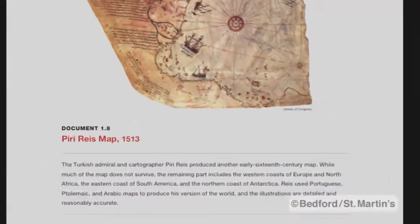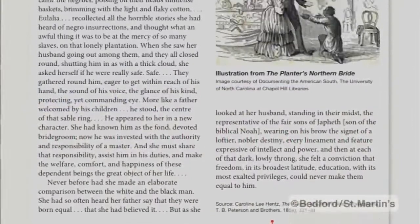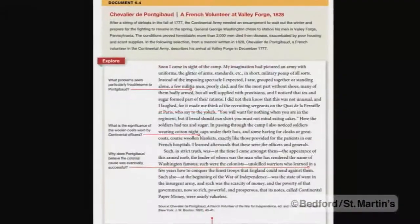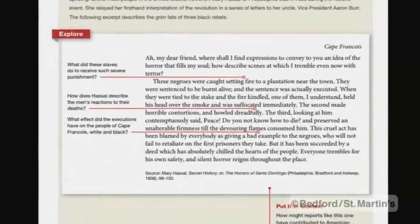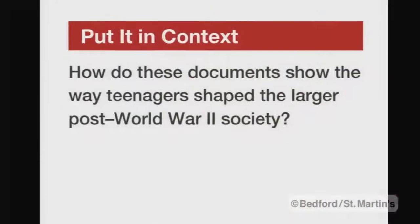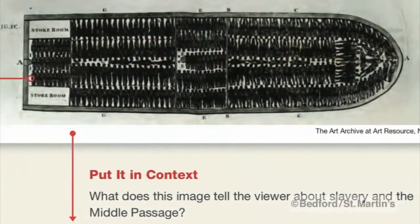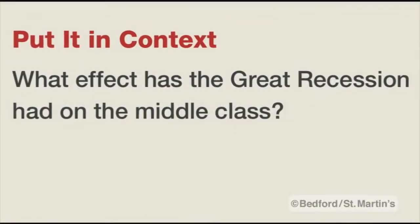An annotated document appears in each chapter. Some are visual, some are textual. They have red lines pointing to particular phrases or images within the document. And then at the bottom of the annotated document, there's a 'put it in context' question where students are asked to think about how this document fits into the overall narrative of the chapter.